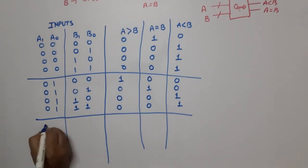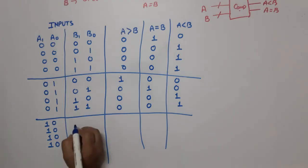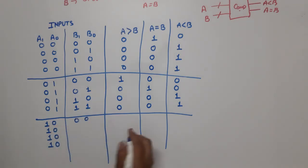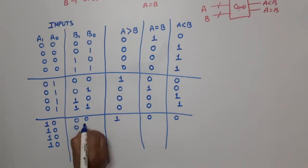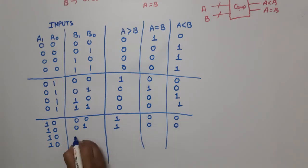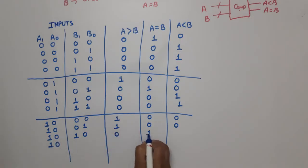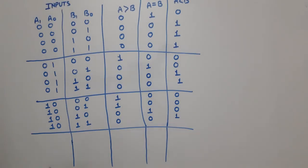Next case: A is 1,0. We compare with all four B combinations. When B=00, A=2 and B=0, so A is greater than B: 1,0,0. When B=01, A=2 and B=1, A is greater than B: 1,0,0. When B=10, both are equal: 0,1,0. When B=11, A is less than B: 0,0,1.